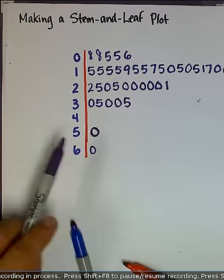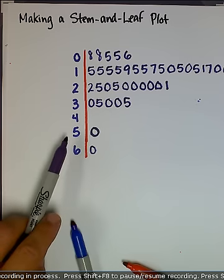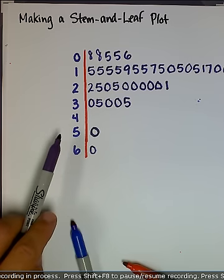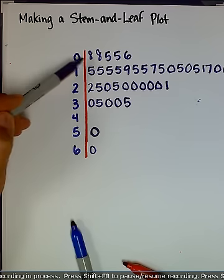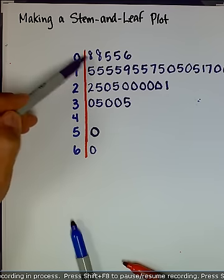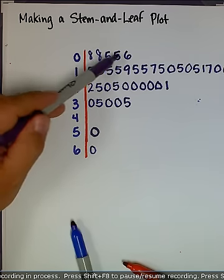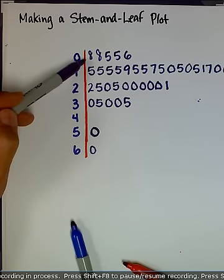Now, what I need to do is reorganize my stem and leaf plot so that it is in order. You notice right here it says 8, 8, 5, 5, and 6. What I need to do is rearrange each of my leaves in order from greatest to least.